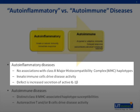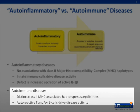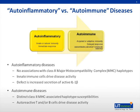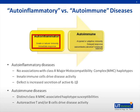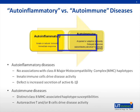On the other hand, in autoimmune diseases, there are distinct class II MHC associated haplotype susceptibilities as well as auto-reactive T or B cells that drive disease activity. In fact, like everything in nature that occurs in spectra and not categories, there are diseases that share features of both auto-immunity and auto-inflammation. The best known of these is Behcet's disease. That is why auto-inflammation and auto-immunity are depicted as a spectrum. In auto-inflammation, the innate immune system is the central component mediating damage, whereas in autoimmune diseases the main defect is in the adaptive part of our immune system.